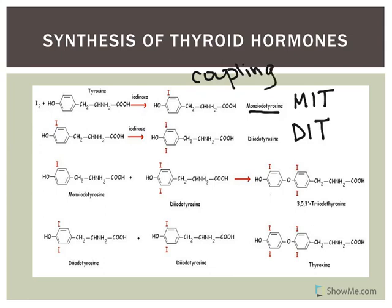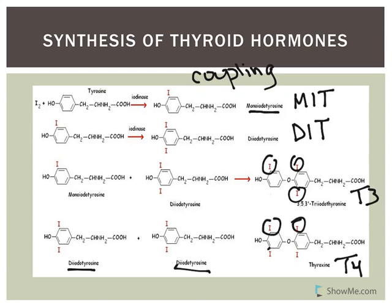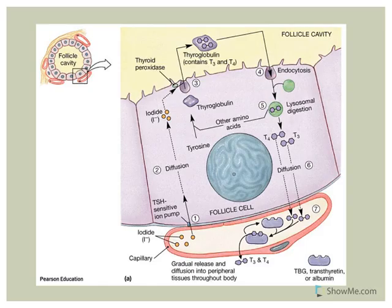All the enzymes involved in these steps are regulated by TSH. To make T3, which has three iodines, you couple one MIT with one DIT. To get T4, also referred to as thyroxine, you couple a DIT with another DIT, resulting in four iodines. These will be attached to thyroglobulin molecules in the follicular cavity and associated with the colloid.